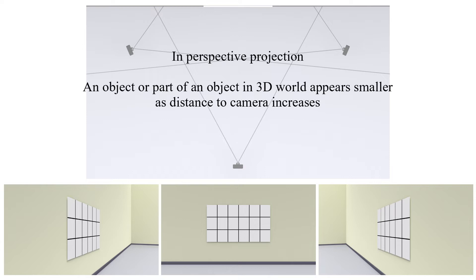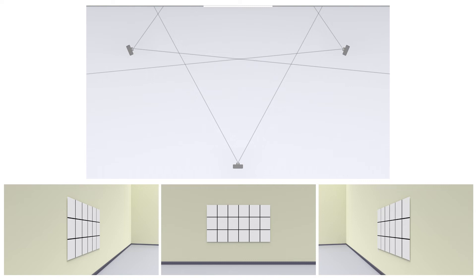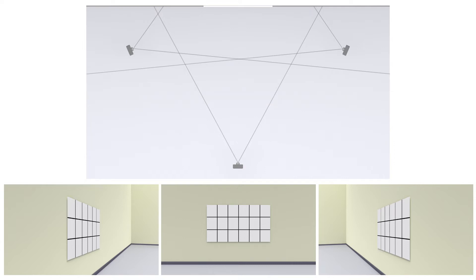An object or part of an object in the 3D world appears smaller as distance to the camera increases. As a result, ratios of dimensions of an object change. Perspective projection preserves lines but may not preserve angles and ratio of lengths over each line. So, viewpoint determines the observed geometry.